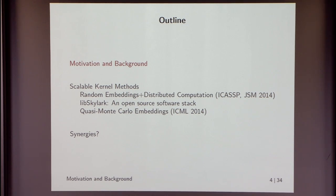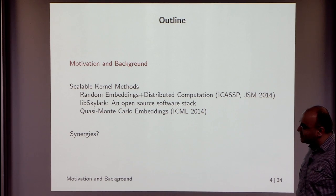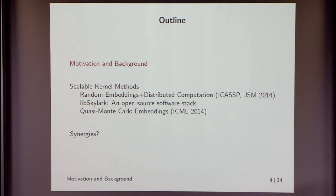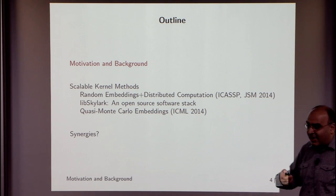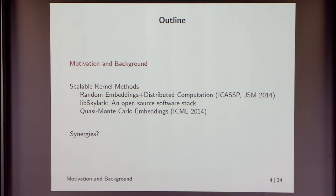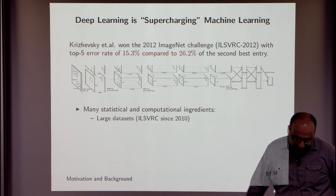I'll start with some motivation and background — a relaxed start to the talk. Then I'll get into approaches to scale up kernel methods, where we'll encounter the idea of random embeddings pioneered by Ben Recht, who is in the audience. We'll see this must be combined with distributed computation. I'll talk about an open source software effort called LibSkyLark, and then look at QMC techniques from numerical analysis to improve efficiency of these random embeddings. I'll conclude with some synergies between kernel methods and deep learning.